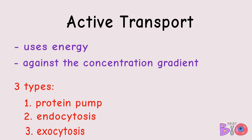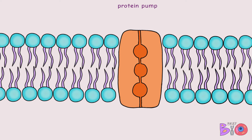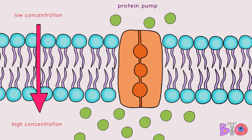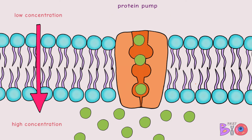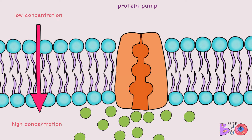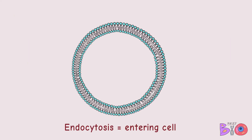Protein pumps are the first type. This transport uses a protein embedded in the cell membrane that pumps molecules from a low concentration at the top to a high concentration at the bottom. The molecules enter the pump, the pump closes, and then opens on the other side of the membrane. This pump needs energy to make this work.